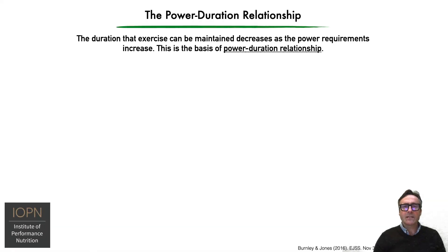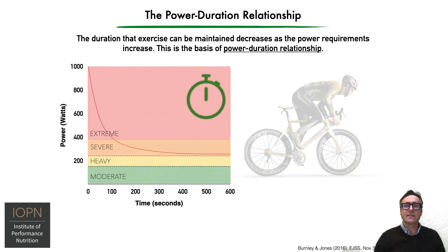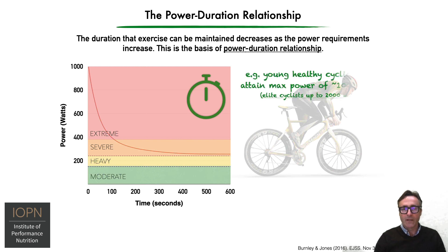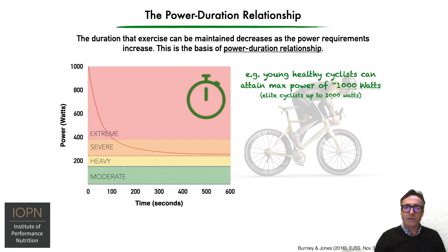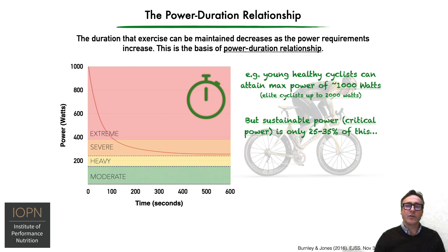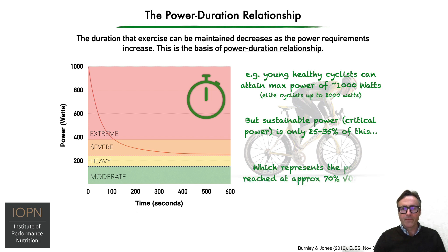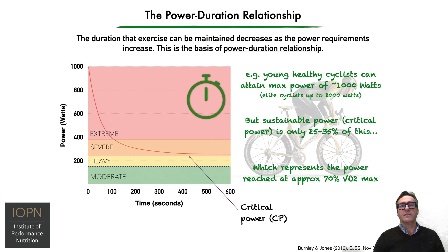The duration of exercise that can be maintained decreases as the power requirements increase, and this is the basis of what is known as the power-duration relationship. For example, a young healthy cyclist can attain a maximum power of around 1,000 watts, and an elite cyclist up to maybe 2,000 watts. But sustainable power, otherwise known as critical power, is only 25 to 35 percent of this, and this represents the power reached at approximately 70 percent of VO2 max.